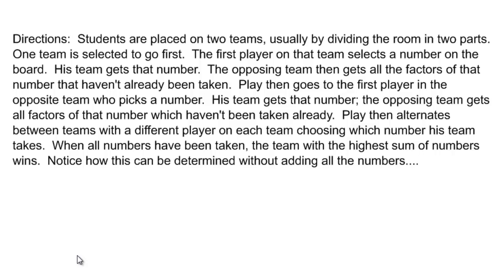Play then goes to the first player on the second team, and he picks a number that hasn't been taken. His team gets that number of points, and the opposing team gets all of the factors of that number which haven't been taken already. You alternate back and forth until all the numbers have been taken, and the winning team is decided by adding up all the numbers each team has accumulated — except we're also going to use properties of inequalities to determine the winner. So we'll be studying both inequalities and factors with this game.